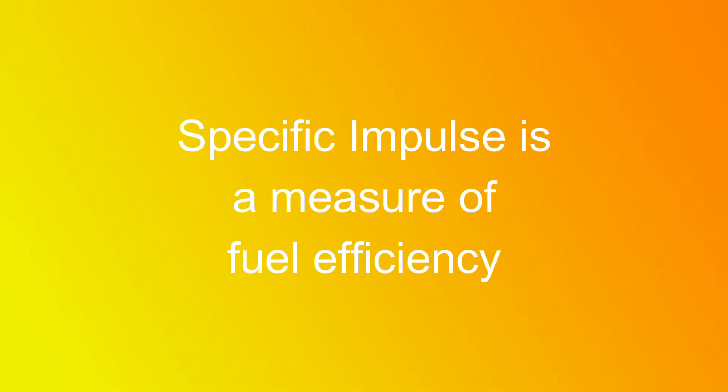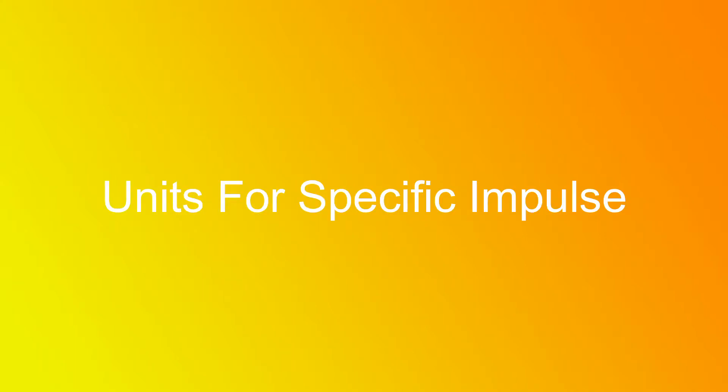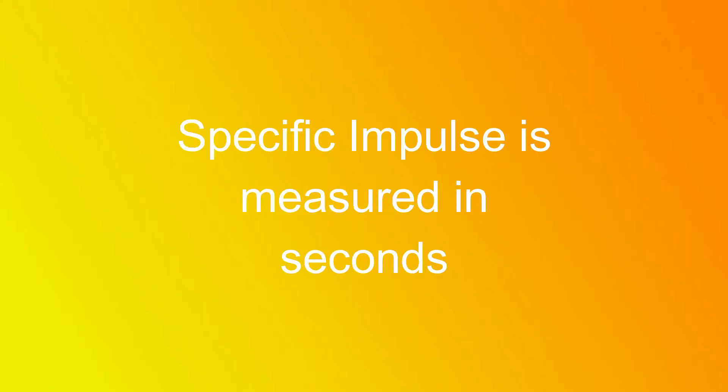Unlike impulse, specific impulse is used to measure fuel efficiency rather than total force. The specific impulse equation is just the total impulse equation divided by the weight of the fuel. Make sure to not divide by the mass. The units for specific impulse are a bit odd. Unlike total impulse, specific impulse is measured in seconds rather than newton seconds. This is because specific impulse is calculated by dividing one force, the thrust of the engine, by another force, the weight of the fuel pushing down on the engine, and this cancels out both forces.